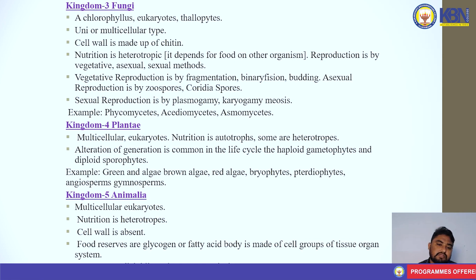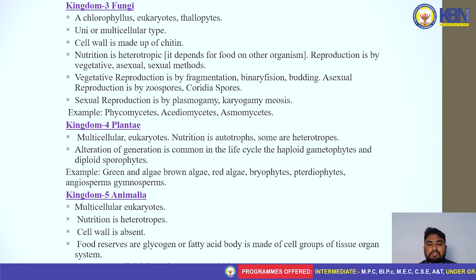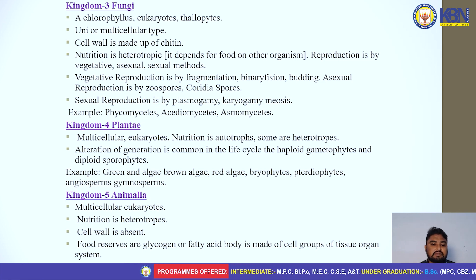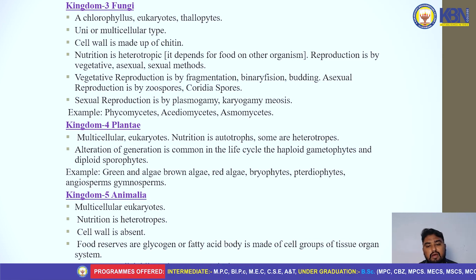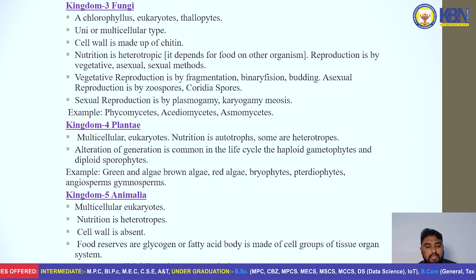Kingdom Plantae consists of multicellular eukaryotes. Nutrition is autotrophic, with some heterotrophs. Alternation of generation is common in the life cycle — haploid gametophyte and diploid sporophyte. Examples include green algae, brown algae, red algae, bryophytes, pteridophytes, angiosperms, and gymnosperms.